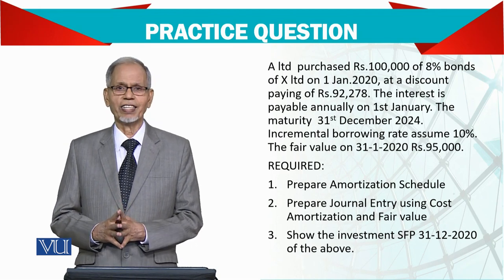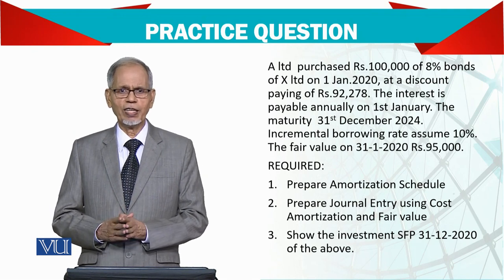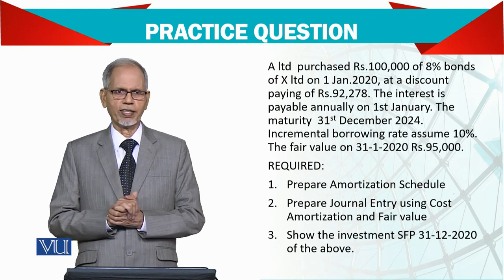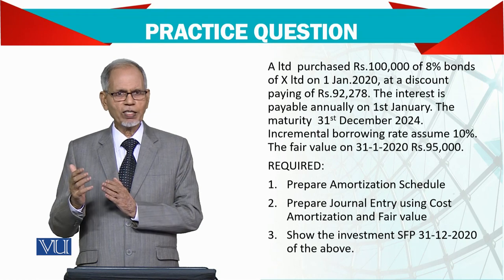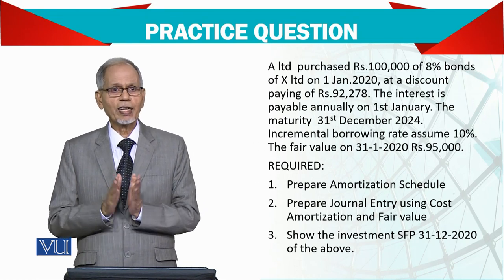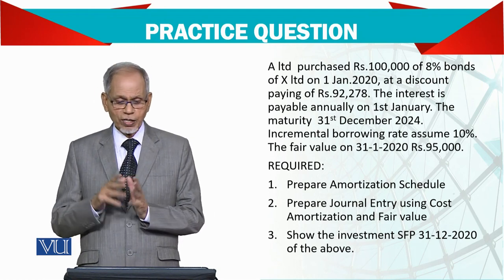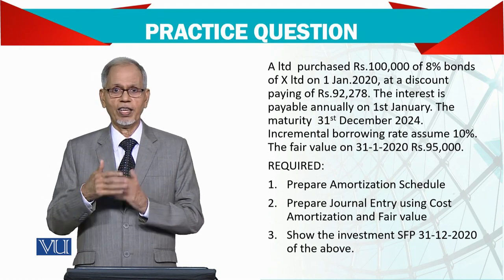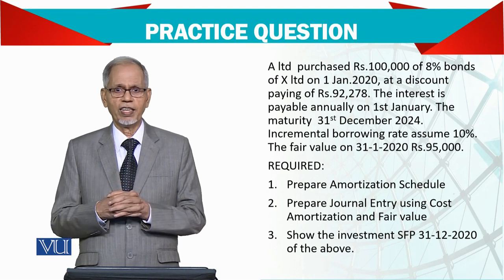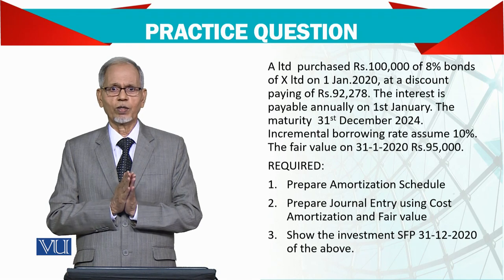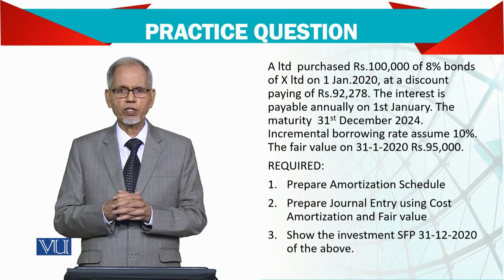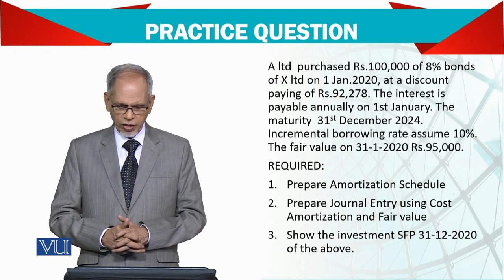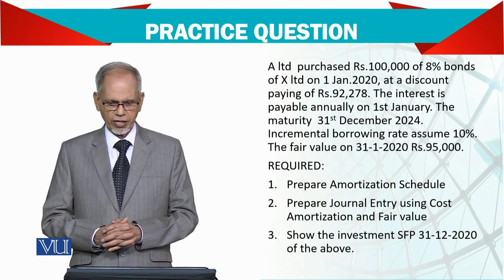यह discount rate है। Company पहले से announce कर देती है, या आपको बता देती है कि इतने पैसे आप दे रहे हैं। इसमें question यह है कि यह जो difference है — साथ हजार साथ सो बाइस रुपया का — यह जो company बेच रही है उसको loss हो रहा है। आप सस्ते में खरीद रहे हैं। Ultimately इसको हमने amortize करना होता है। यह चार साल का bond है तो चार सालों में इसको write off कर लें।